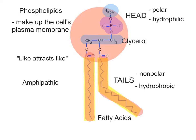Phospholipids are described as being amphipathic, which means they have both polar and nonpolar regions in the same molecule. You can remember this term from the word amphibian, which are the frogs and toads. They live in two environments, land and water — like the phospholipids with two different chemical environments, polar and nonpolar.